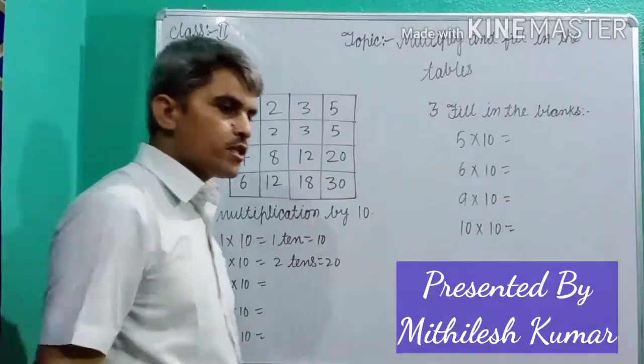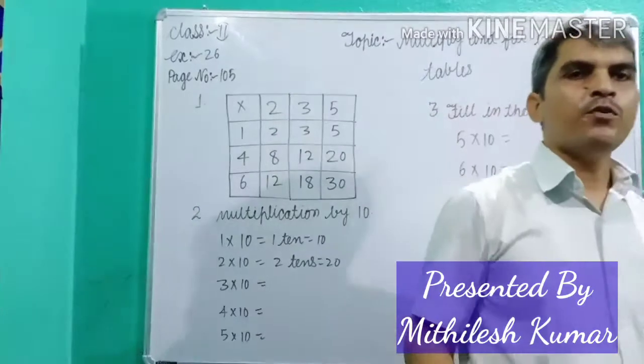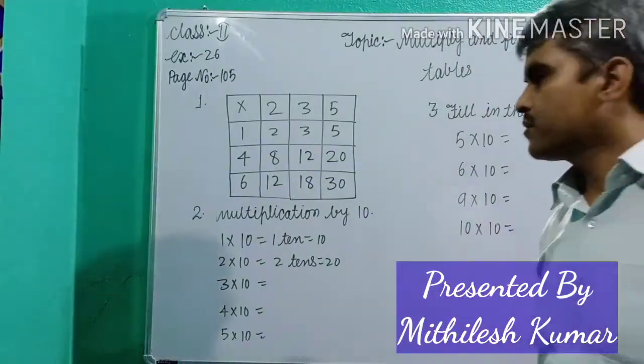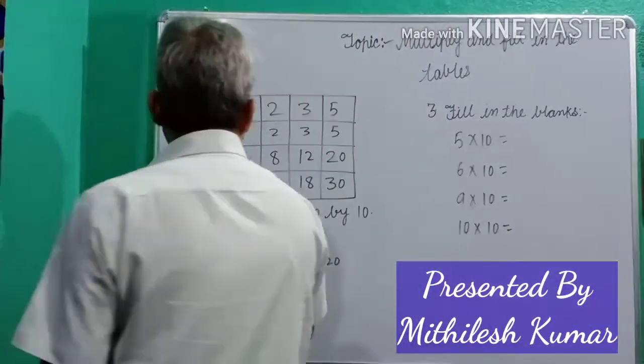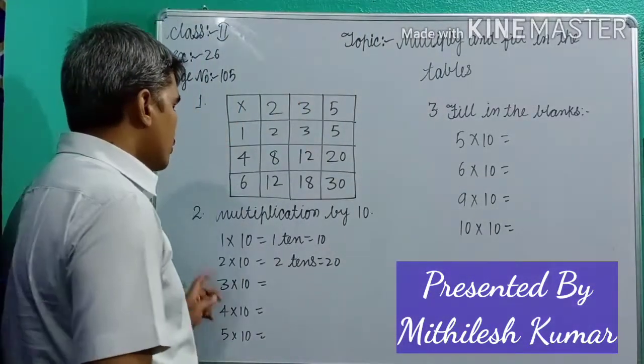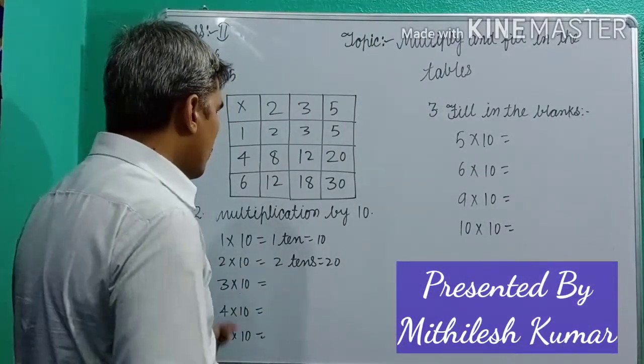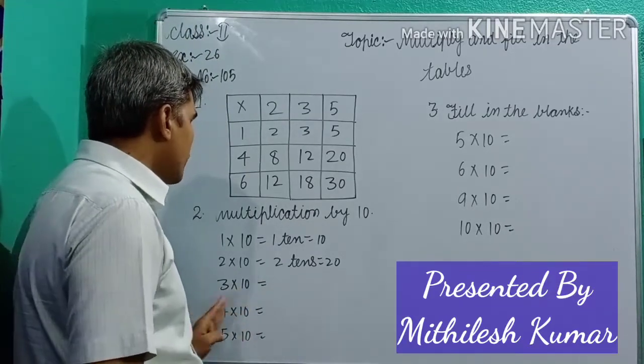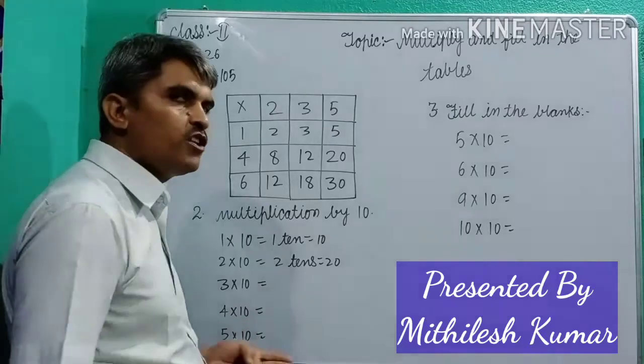Now, second question. When you read the multiplication tables of 10. Think that. 1 tens is 10. 2 tens is 20. 3 tens is 30. 4 tens is, 10 fours is 40. 10 fives is 50 in this period.